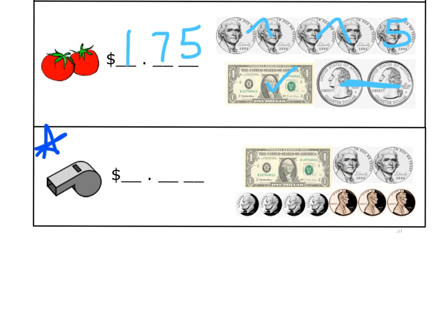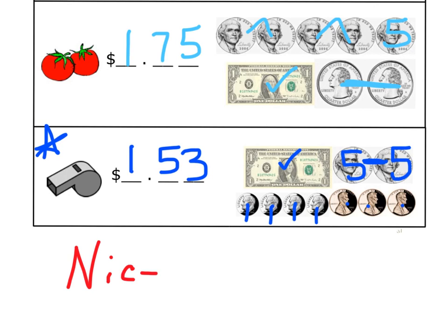Last but not least, we have the coach's whistle. Let's count it up. We have one dollar. Be careful — those are nickels, this must be a newer nickel than you're used to seeing. So that's ten cents, then twenty, thirty. One dollar and fifty cents. Then three more pennies — three cents. One dollar and fifty-three cents. Nice work practicing counting money and writing money amounts using dollar signs and decimal points.